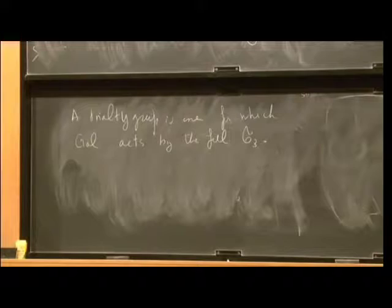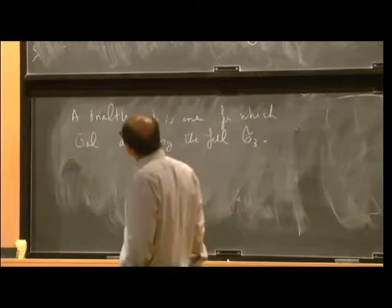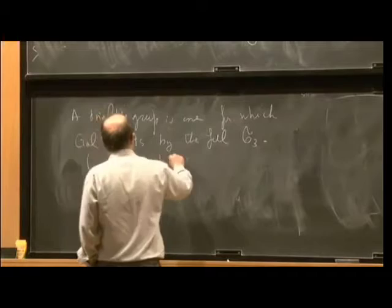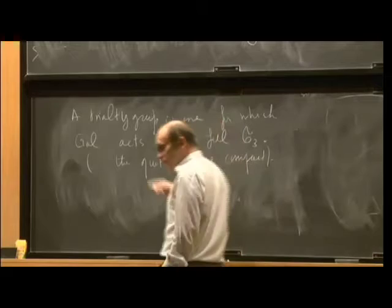This exists, and this exists with my usual situation. G will be of type 7, 7, 1 at infinity. And in this case, in fact, the group is necessarily anisotropic. So in this case, the quotients are compact.